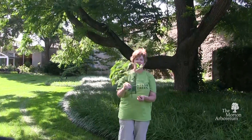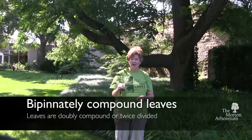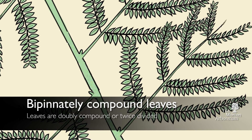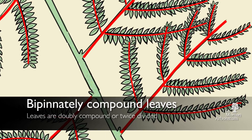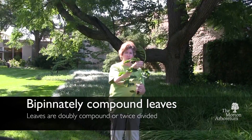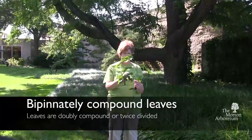Here we have our Kentucky coffee tree — scientific name means 'naked branch.' One distinguishing feature is the leaf. This is just one leaf, and it's what's called bipinnately compound, meaning the leaves aren't compounded just once but twice. So remember, bipinnately means doubly compound. The leaves on a Kentucky coffee tree are rather large.